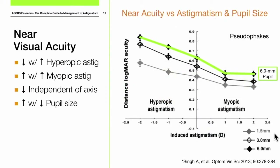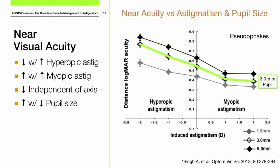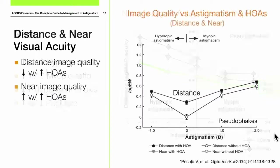Similarly to distance, as we decrease our pupil size, we also see improvements in visual acuity and less effect of astigmatism.